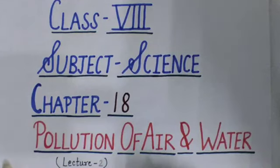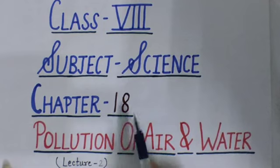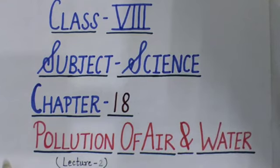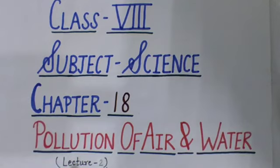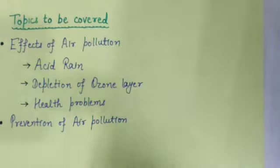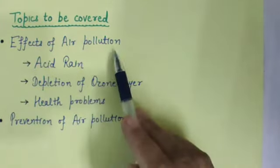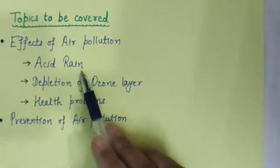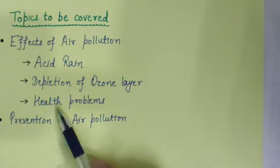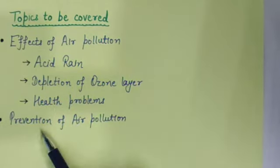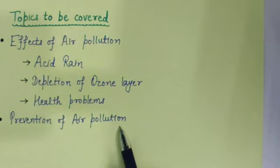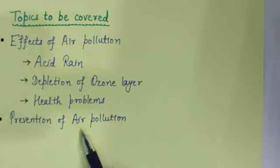Welcome back students. We were studying chapter number 18 of subject science, that is pollution of air and water. This is your lecture number 2. In the previous lecture, we learned what is air pollution and what are the sources of air pollution. Now we will discuss some more topics of this chapter: effects of air pollution, acid rain, depletion of ozone layer, health problems, and prevention of air pollution.